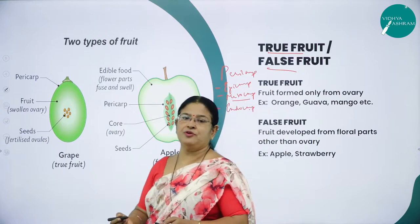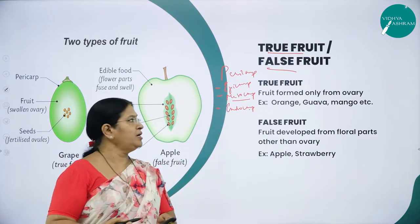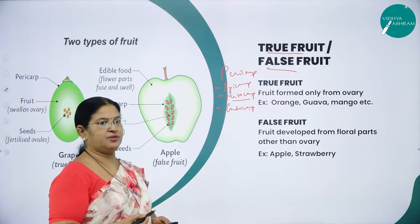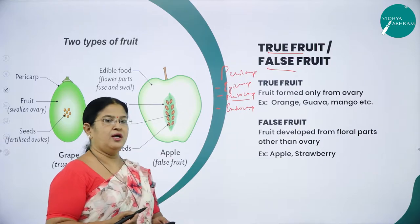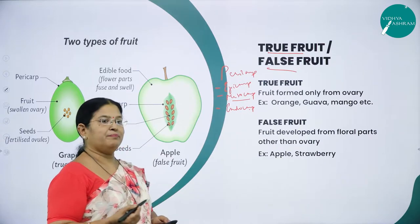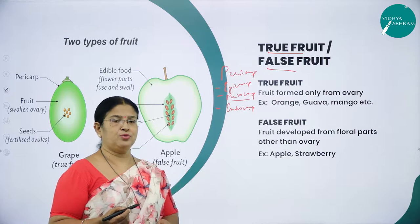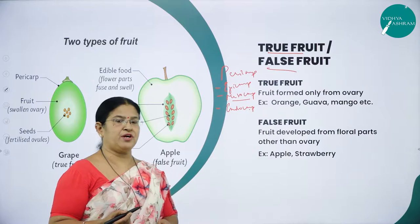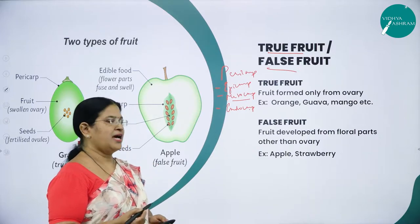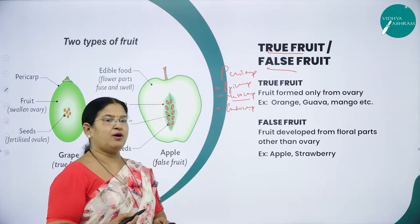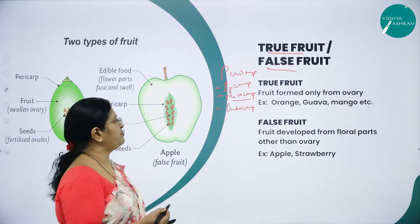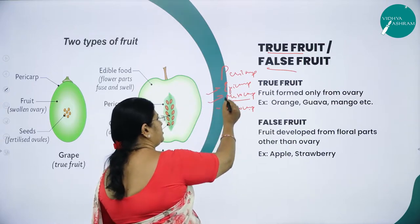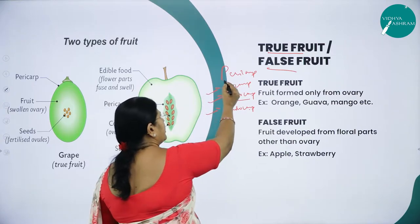Fruit is a ripened ovary and the ovary wall develops into the fruit wall called pericarp. Based on the nature of the pericarp, we have two types of fruits: fleshy fruits, where the pericarp is fleshy, and dry fruits, where the pericarp is dry. The pericarp is again divided into three layers — outer epicarp, middle mesocarp, and inner endocarp.